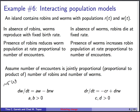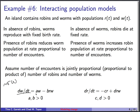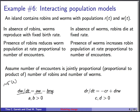Taking all of this and turning it into math: the rate of change of the worm population is dw/dt. Worms reproduce with birth rate a, giving the term a times w. The presence of robins reduces the worm population proportionally to their encounters, so we subtract b times r times w, where b is a constant of proportionality and the product r times w represents the number of encounters.